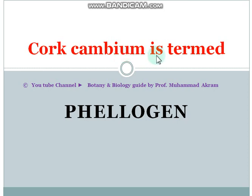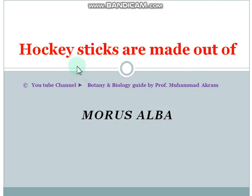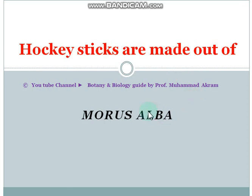Cork cambium is termed as phellogen. Hockey sticks are made from the wood of Morus alba, while cricket bats are made from Salix alba, the willow tree.